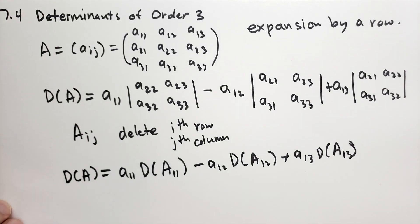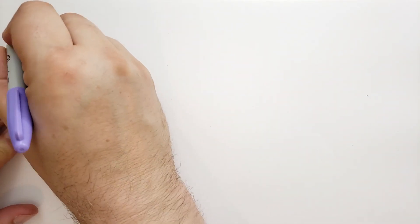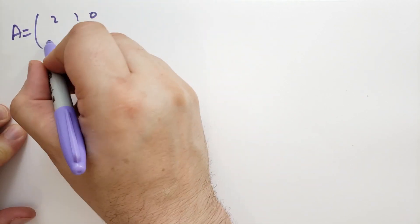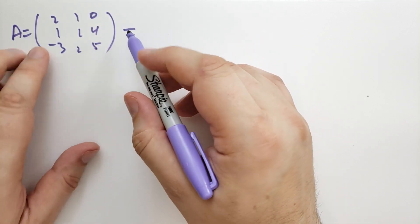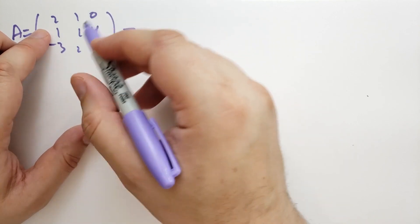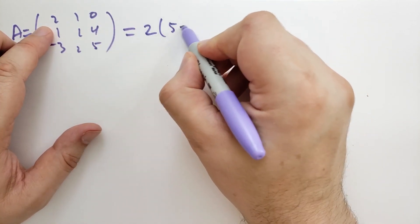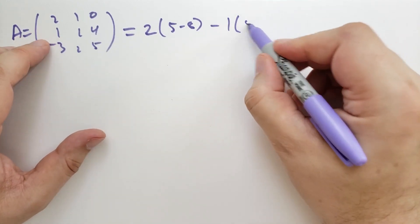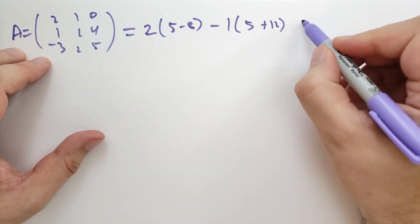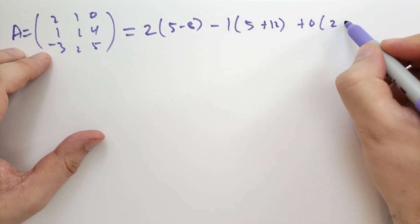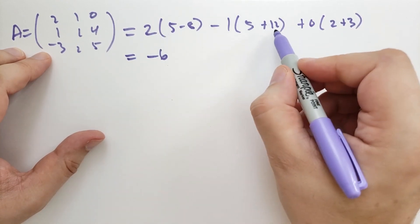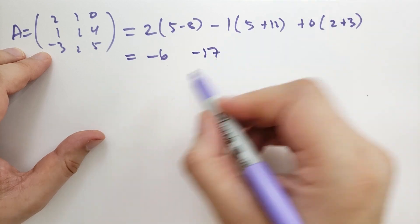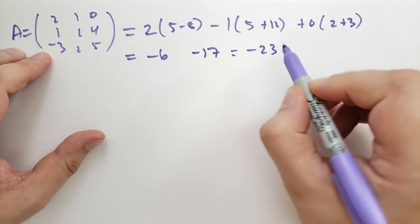As an example, we have to use a lot of paper here. I haven't used this for a long time, I don't even know if this marker works. We have A is equal to the matrix 2, 1, 0, 1, 1, 4, -3, 2, 5. Now I am just going to write this out in my head because I don't want to write it out for you, but I will explain to you what I did in a second. So this is 2 times 5 minus 8 minus 1 times 5 plus 12 plus 0 times 2 plus 3. So we get 5 minus 8 is 3, this is minus 6. We get 5 plus 12 is 17, so we get minus 17, and this is 0, so we're going to get minus 23. That's how I did it.